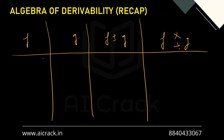We consider three cases: Case 1 — both F and G are differentiable. Case 2 — F is differentiable but G is not (or vice versa). Case 3 — both F and G are not differentiable.